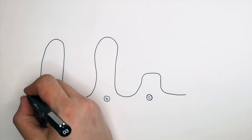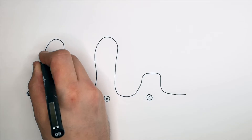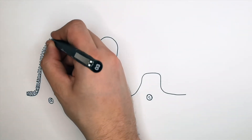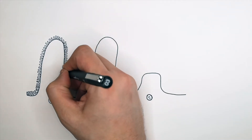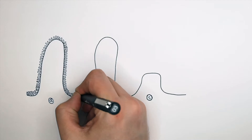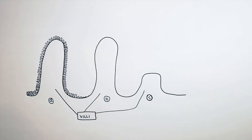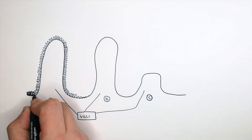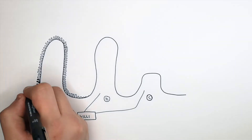Villi A is covered in micro villi. Where there are folds in cells called villi that are large folds, micro villi are microscopic sized folds that cover the surface of cells. Here I'm drawing micro villi, and I'm purposefully not drawing any micro villi on villi B. Folds in the cells are called villi, and folds that cover the cells are called micro villi.